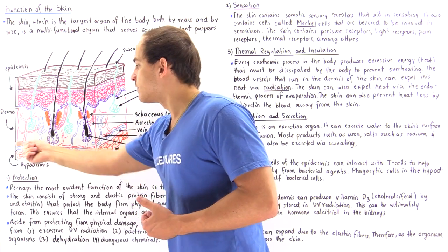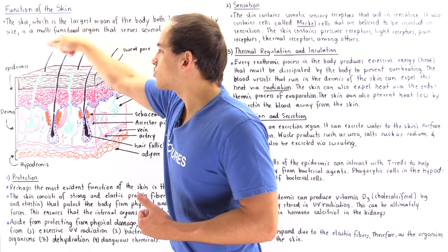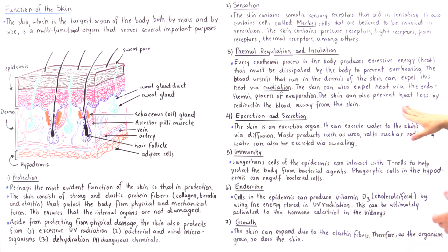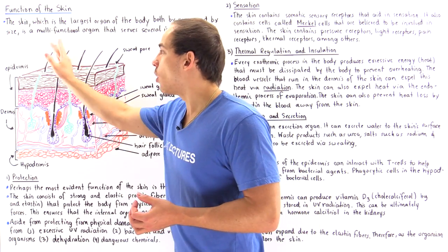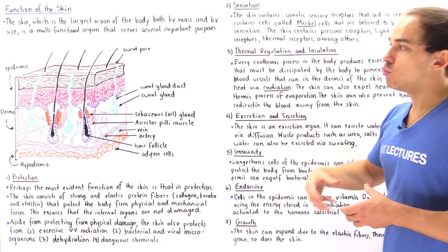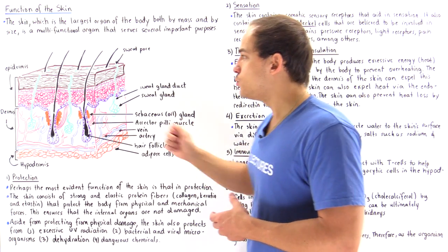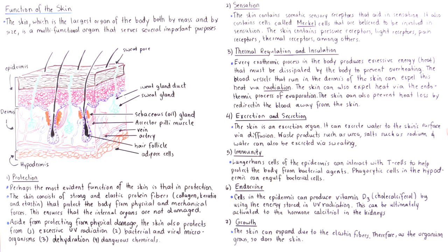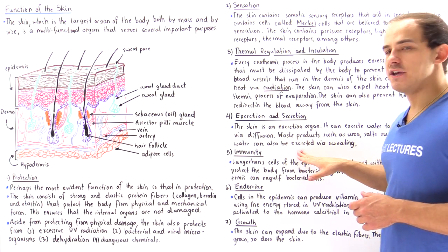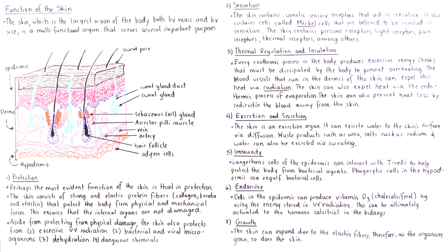The heat rising from the blood vessels in the dermis vaporizes that water from the surface of the skin. Another process that takes place is transepidermal water loss, which is different from sweating — water actually diffuses across the upper portion of the skin and is lost through diffusion. So the skin excretes water via diffusion, and excretes waste products such as urea, salts such as sodium, and water via sweating and transepidermal water loss.